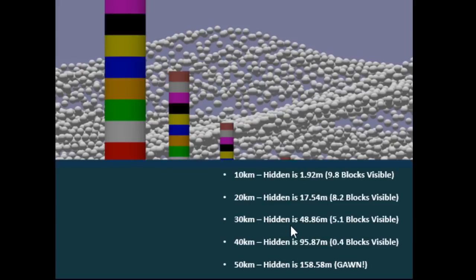The 30 kilometre block we should see 5.1 blocks. 1, 2, 3, 4, 5 and a little bit of blue. That one checks out.